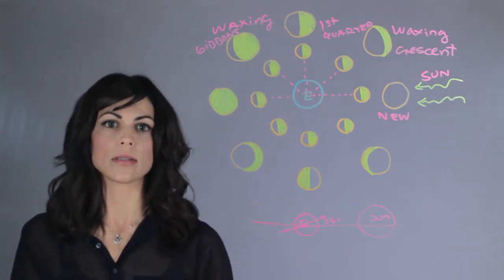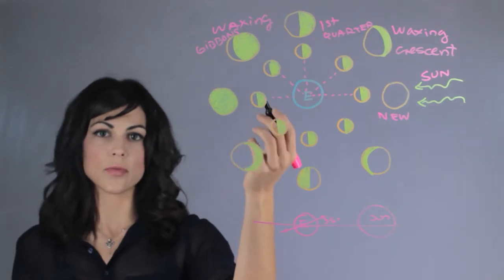And then we look at it at 180 degrees and we're seeing the moon being fully lit and this is a full moon.